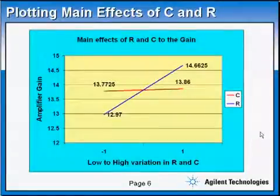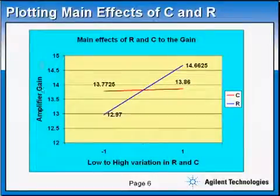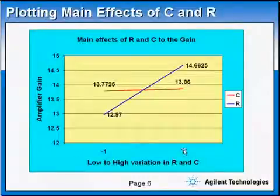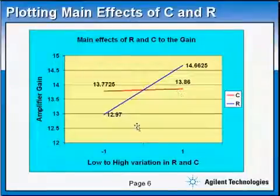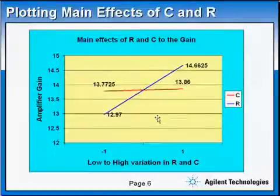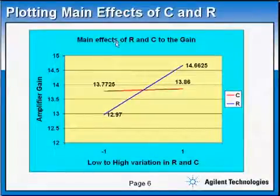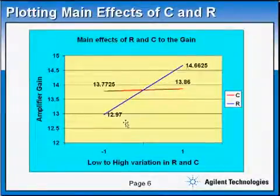So we plot these to see it much easier. You can see the amplifier gain on the y-axis and we have minus one to plus one. The blue line represents the resistor, the gain change due to the resistor, and the red one is due to the capacitor. Easily you can see that the resistor is contributing more variation in gain than the capacitor. So these are called the main effect plot. When I talk in DOE about main effects or effects plots, they look like this.